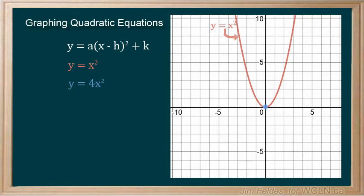We know one point is the vertex, 0, 0. And we know our y value increases 4 times faster than our x. So, from the vertex, the first point right is 1, 4.